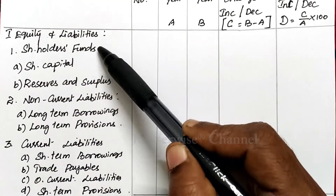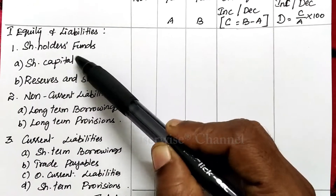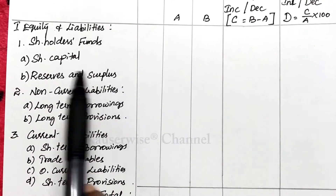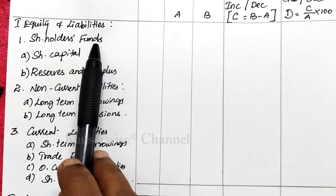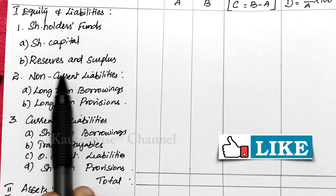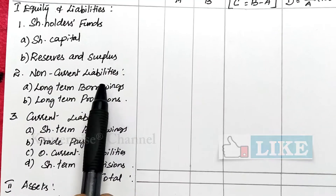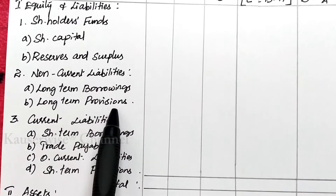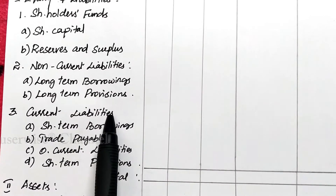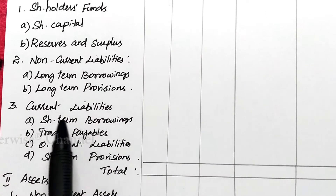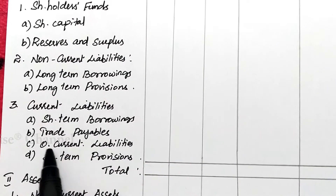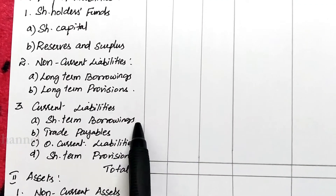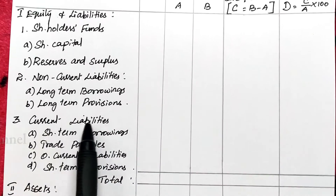Under shareholders fund there are two components: share capital and reserves and surplus. Under non-current liabilities there are two things: long-term borrowings and long-term provisions. Under current liabilities there are: short-term borrowings, trade payables, other current liabilities, and short-term provisions.